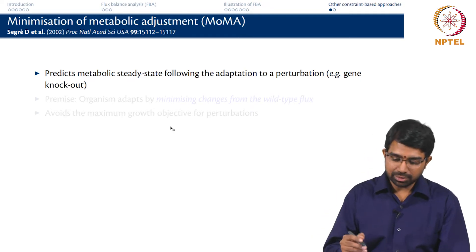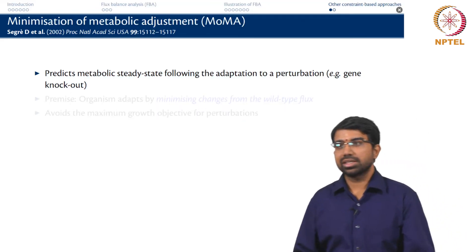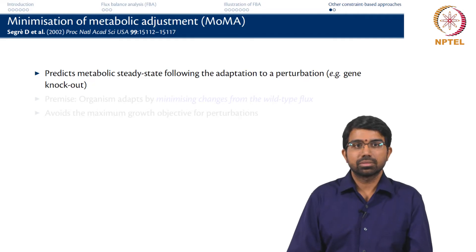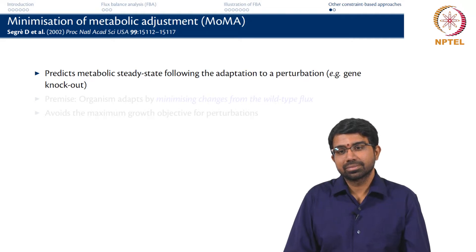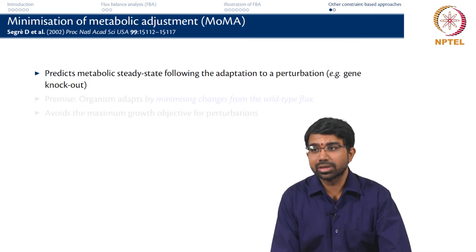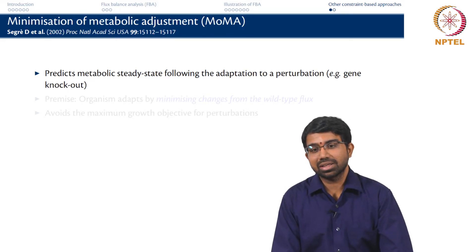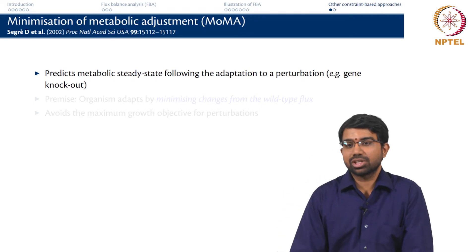This brings us to the question: how do you delete a gene from a metabolic model? In the model, you remove the corresponding reaction, because the gene is basically an enzyme which catalyzes a reaction. So you need to remove a particular reaction from the model.